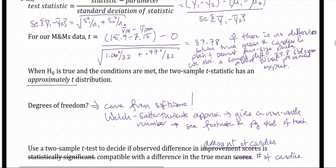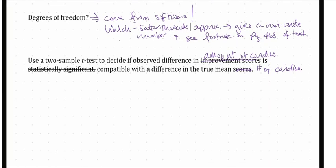That's a quick recap. We've observed a t-test statistic of 37.78 — our sample difference is 37.78 standard errors above the hypothesized value. To use our two-sample t-test to decide if this observed difference is compatible with a difference in the true mean, we have to check our conditions. First, we need a quantitative response — in order to talk about a mean response — and a categorical explanatory variable. If we had a quantitative explanatory variable instead, we would be doing regression.